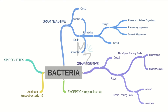Gram negative bacteria is further classified into cocci and rods. Rods, for ease of understanding, are further classified into aerobic, anaerobic, and facultative. Facultative are further classified into curved and straight. Straight are further classified into enteric and related organisms, respiratory organisms, and zoonotic organisms. These are still microorganisms — don't think they are large organisms.